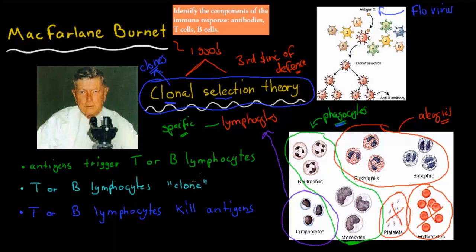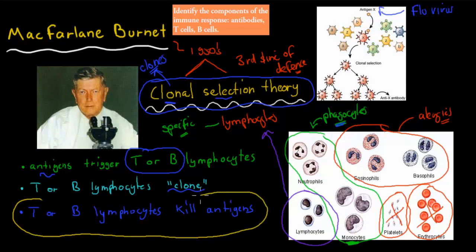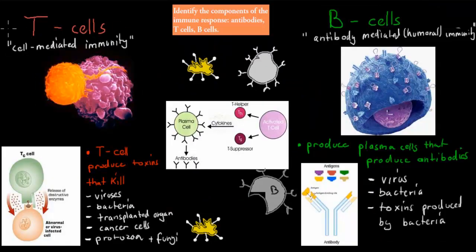The clonal selection theory, which was proposed by McFarlane Burnett, means that a certain specific type of antigen triggers either T or B lymphocytes. There are two different types of lymphocytes. They will be triggered by a specific type of antigen, and these lymphocytes clone to make copies of themselves. These many copies will then start attacking that specific type of antigen — for example, the flu virus — but only the flu virus. It won't touch the HIV virus or the tetanus bacteria. So that's the third line of defense.